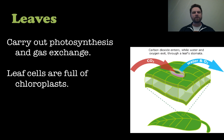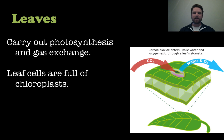Let's look at leaves first. Leaves carry out photosynthesis and gas exchange in the plant because they are full of chloroplasts. Chloroplasts are the organelle within plant cells that contain chlorophyll, and they actually do all of the photosynthesis — kind of like mitochondria do cellular respiration.